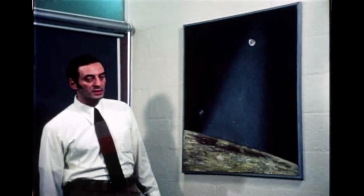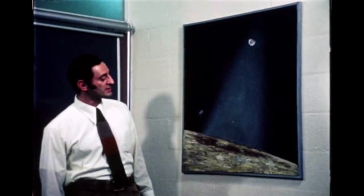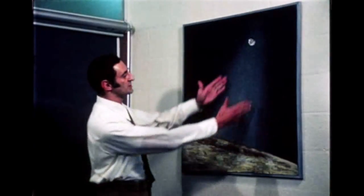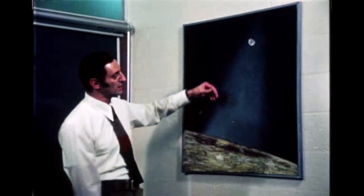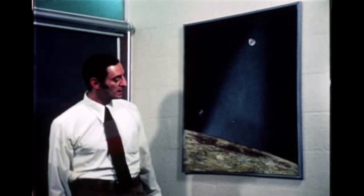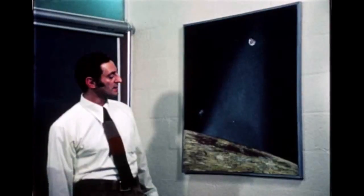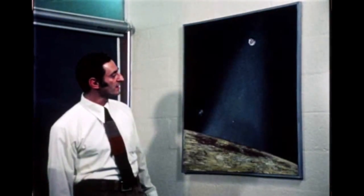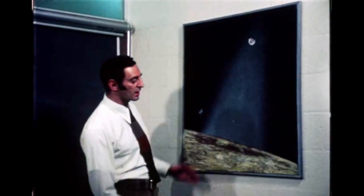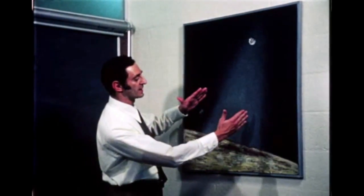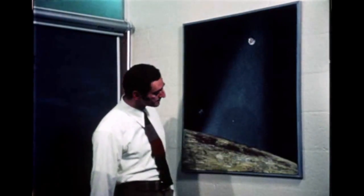The word zodiacal derives from zodiac, which is a band along the sky, positioned approximately here, along which the sun, the moon, and the planets move across the sky as seen from the Earth. The zodiacal light is concentrated along this band, and it is brightest toward it and toward the sun.